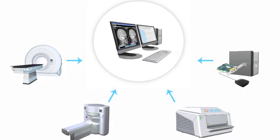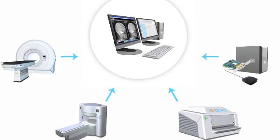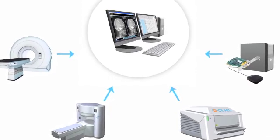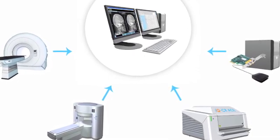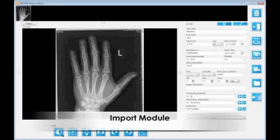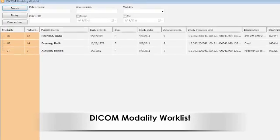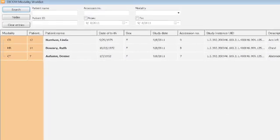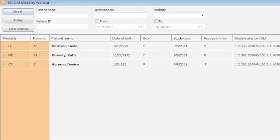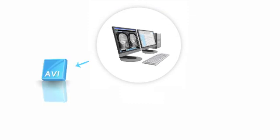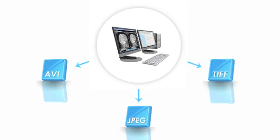IQView can also work as an acquisition station by importing studies or documents from scanners, files, or any TWAIN sources to the DICOM database. The incoming items, for example reports or laboratory data, can then be attached to existing studies. Patient demographics may be reconciled by querying a DICOM modality worklist. With IQView, you can export DICOM images, series, or studies in multiple still or movie file formats to create fully IHE-PDI compliant portable media.